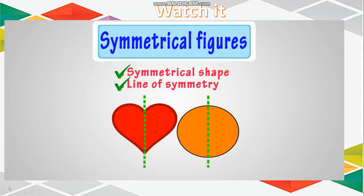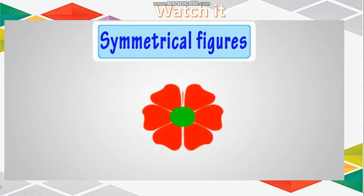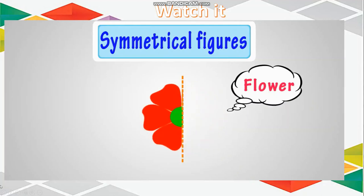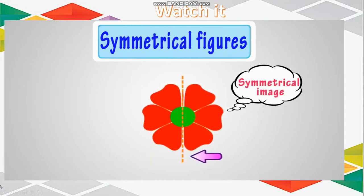Now let's try this with another figure. Here we have an image. Let's try to fold it and see if it is a symmetrical figure or not. Here we are folding it. Yes. If we fold this image here, it completely covers the other half. So it's a symmetrical image. And this line of fold is its line of symmetry.